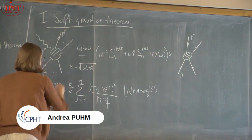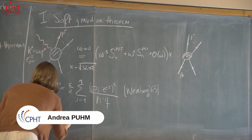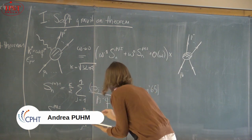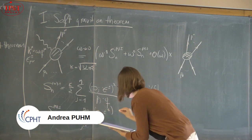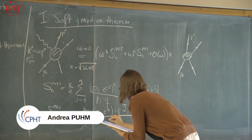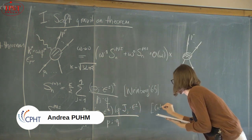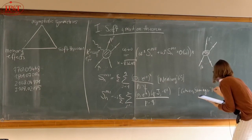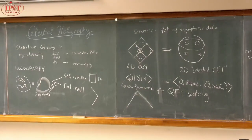The leading soft factor S⁰ is given by the coupling κ = √(32πG), and a sum over all hard particles i=1 to n of the factor (ε^{μν} p_{iμ}) / (p_i · q). The sub-leading soft factor S¹ was only found very recently by Cachazo and Strominger in 2014, leaving quite a gap between finding the leading and sub-leading behaviors in the soft limit.